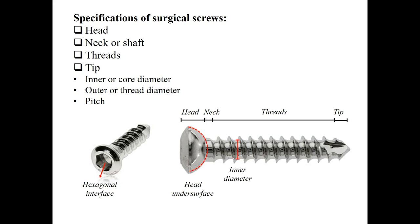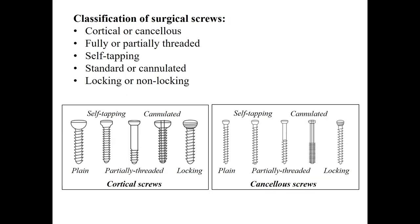The diameter of the shaft is called the core or inner diameter. The outer diameter determines the minimum diameter of the hole through which the screw could slide without engagement of threads. Pitch is the linear distance a screw travels for each complete turn.